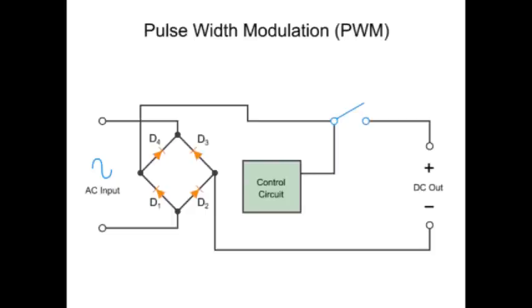In this example, a PWM uses a full wave rectifier to convert an AC input voltage into a DC output level of 300 volts.